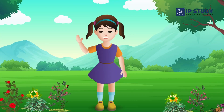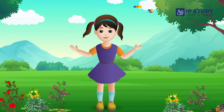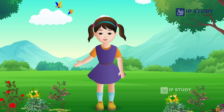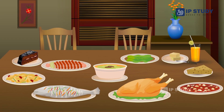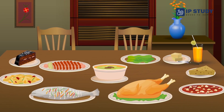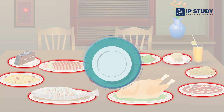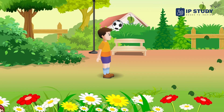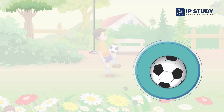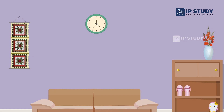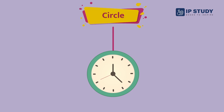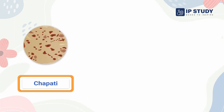Let's look at some examples of things we find around us in circle shape. Do you see the plates on the table? The shape of these plates is a circle. Raj is playing with a ball — the shape of the ball is a circle. There is a clock on the wall — the shape of this clock is also a circle.